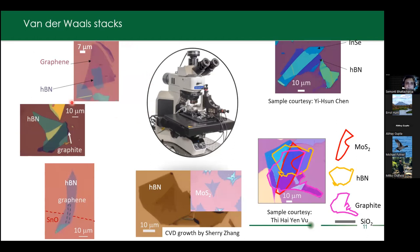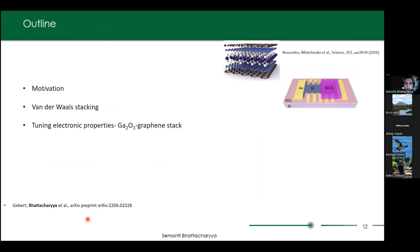These are some of the van der Waals stacks created using those setups. One example shows a thin graphene layer with hexagonal boron nitride on top. Another case shows graphene encapsulated by hBN on top and half of the graphene encapsulated by a very thin layer of standard oxide at the bottom. Now I have introduced the technique and the motivation, and I'm going to go into the actual experimental results on tuning electronic properties of gallium oxide–graphene stacks.